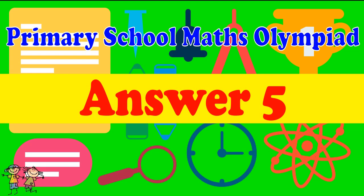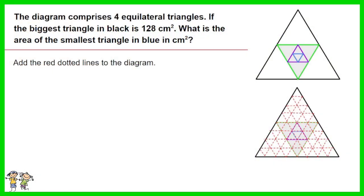Answer for question 5: Add the red dotted lines to the diagram. The biggest triangle in black comprises 64 equal-size small equilateral triangles.